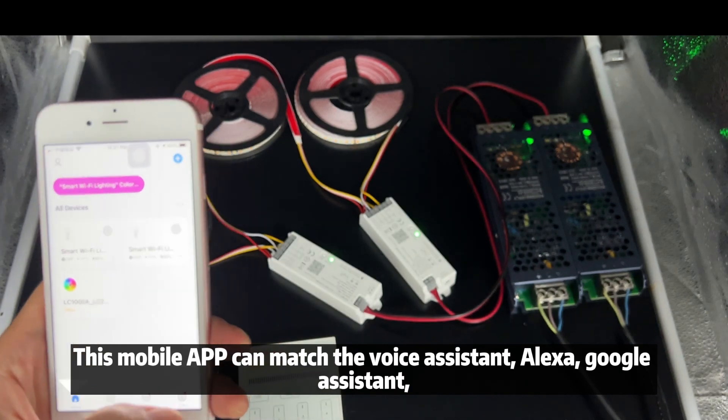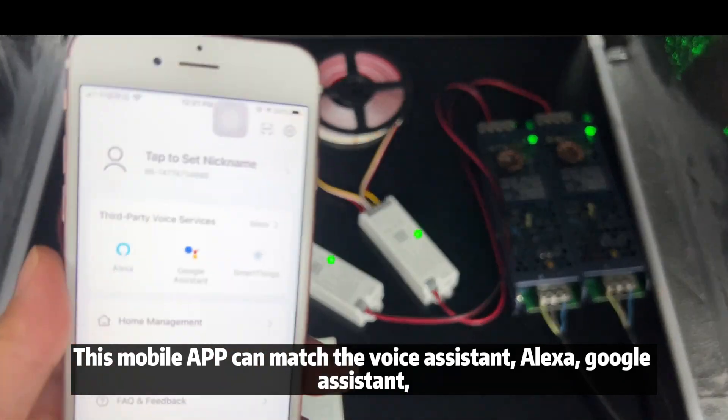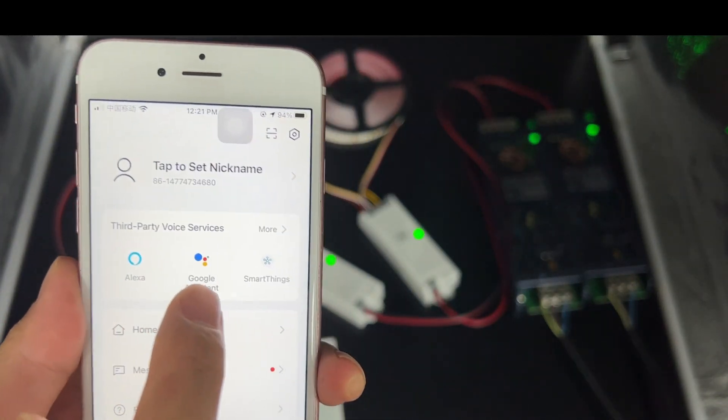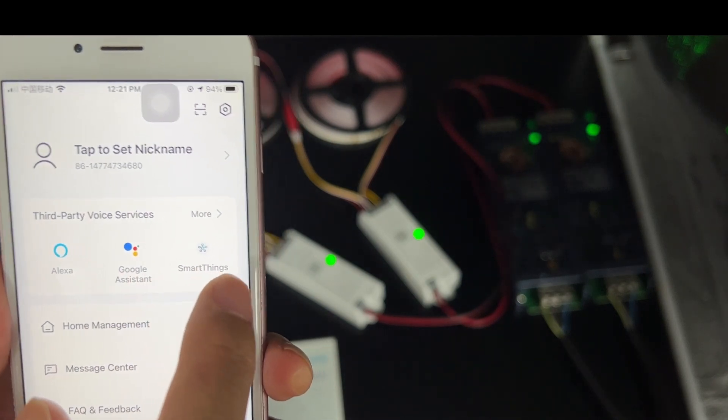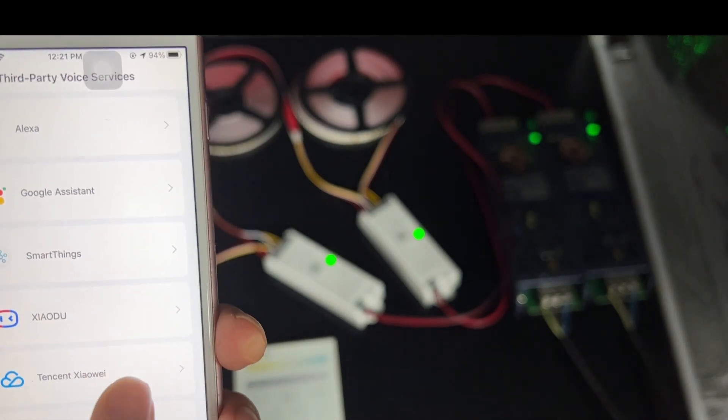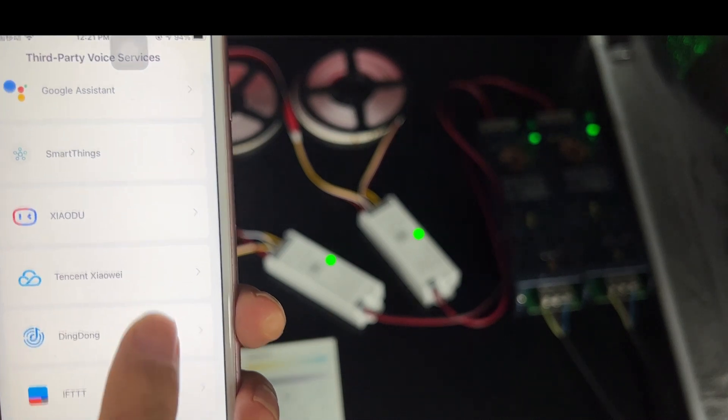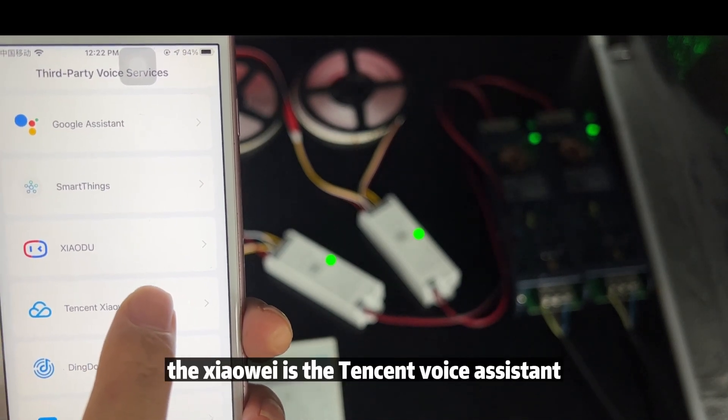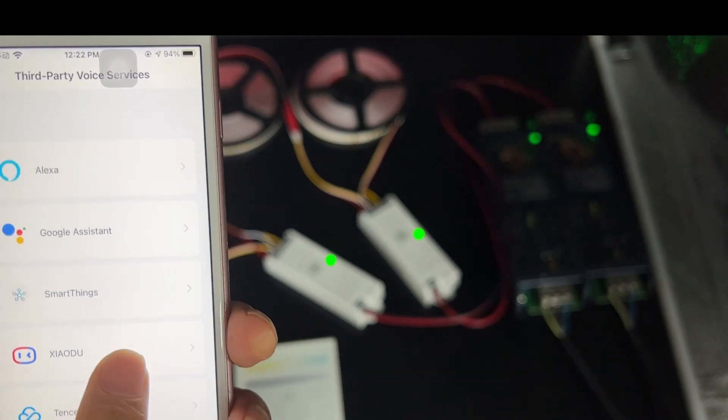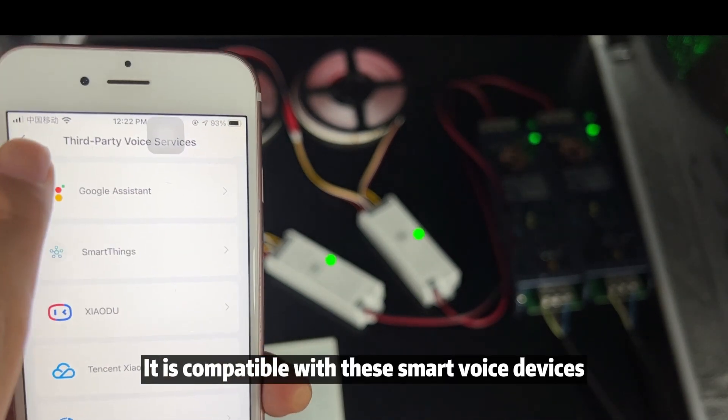Let's look at the mobile app control. This mobile app can match the voice assistant. Alexa, Google assistant, Xiaomi and Tmall Genie. The Tmall Genie is the Tencent voice assistant. It is compatible with these smart voice devices.